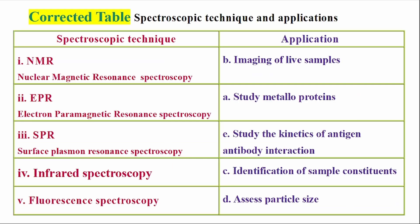Starting with the spectroscopic technique and application: NMR, which means Nuclear Magnetic Resonance Spectroscopy, is used for imaging of live samples. EPR, Electron Paramagnetic Resonance, is used to study metalloproteins. Surface Plasmon Resonance Spectroscopy is used to study the kinetics of antigen-antibody interaction. Infrared Spectroscopy is used for identification of sample constituents. Fluorescent Spectroscopy is used to assess particle size.